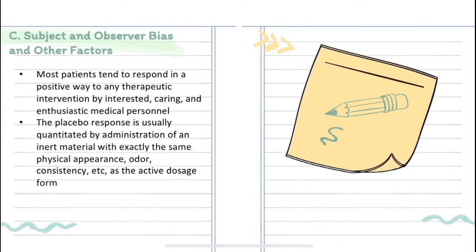The third confounding factor is subject and observer bias. Most patients tend to respond in a positive way to any therapeutic intervention by interested, caring, and enthusiastic medical personnel. The placebo response is usually quantitated by administration of an inert material with exactly the same physical appearance, odor, consistency, and so on, as the active dosage form.